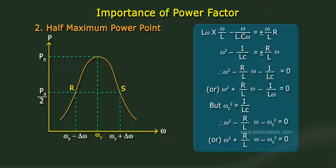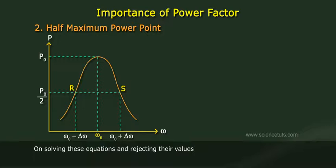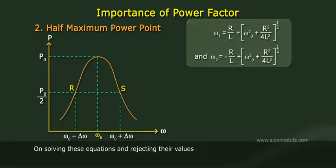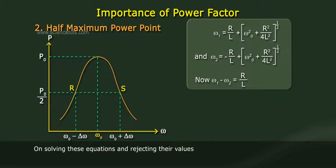Since 1/(LC) equals ω₀², the equations become ω² − (R/L)ω − ω₀² = 0 and ω² + (R/L)ω − ω₀² = 0. Solving and rejecting negative values: ω₁ = R/(2L) + √(ω₀² + R²/(4L²)) and ω₂ = −R/(2L) + √(ω₀² + R²/(4L²)). Thus ω₁ − ω₂ = R/L.